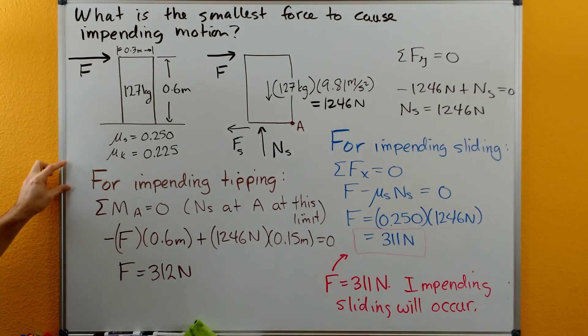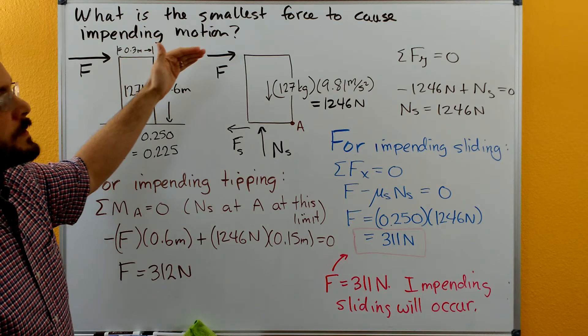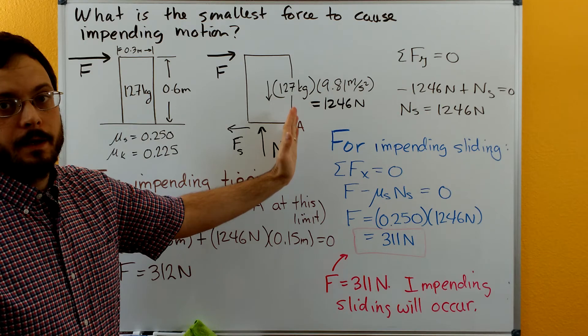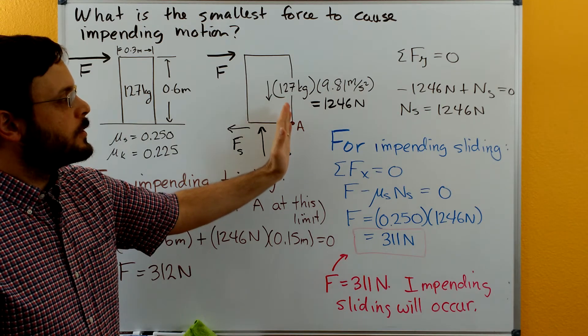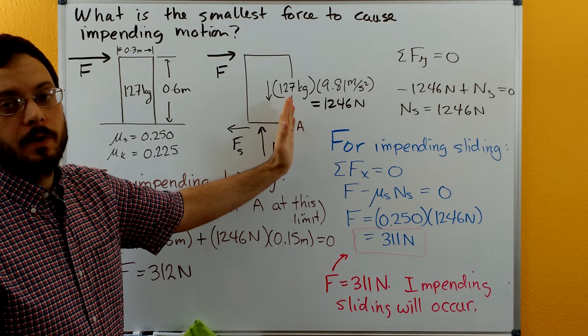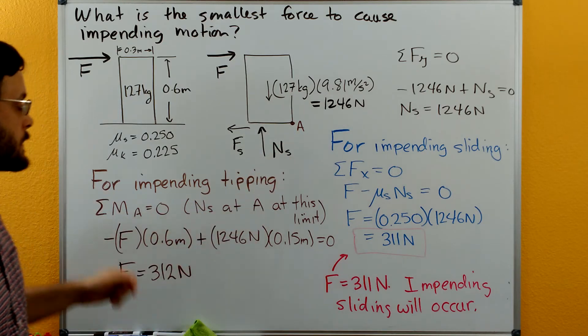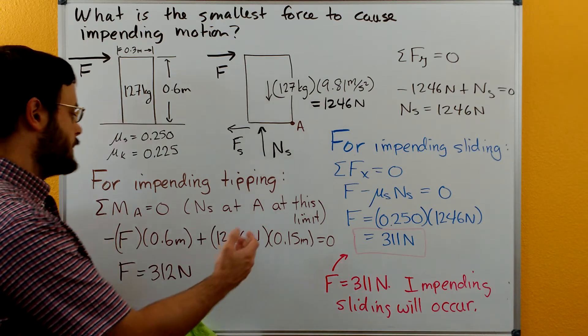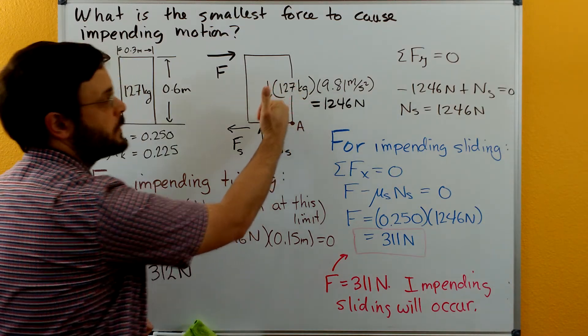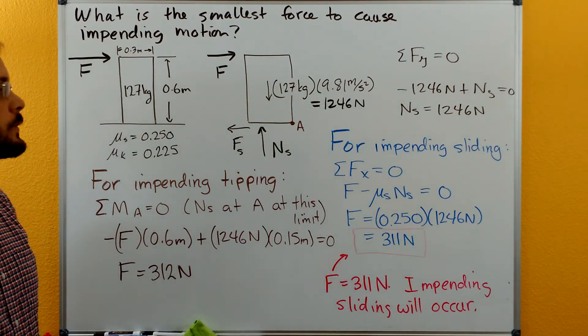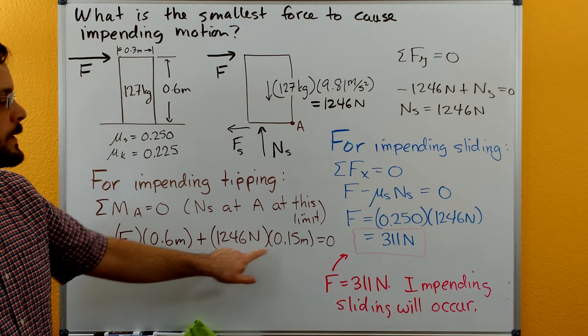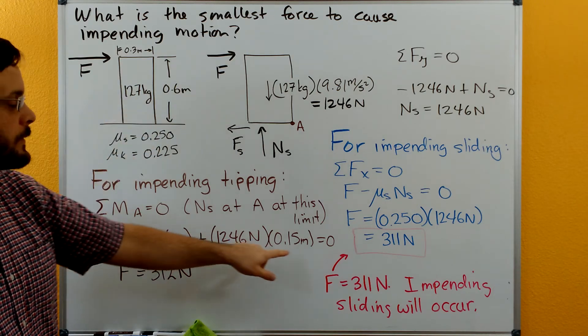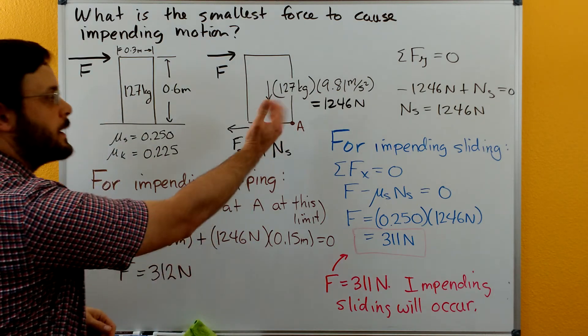So looking at impending tipping, as it starts to tip over the normal force is going to shift over to point A, and once the normal force is at point A you're going to have impending tipping. So we can do a sum of moments about point A. We'll have the positive moment from the weight, the 127 kilograms times 9.81 times half of the width of the block, so half the 0.3, and that'll be a positive moment. And then we'll have a negative moment about A caused by the force F, and we'll multiply that by the overall height of the block.